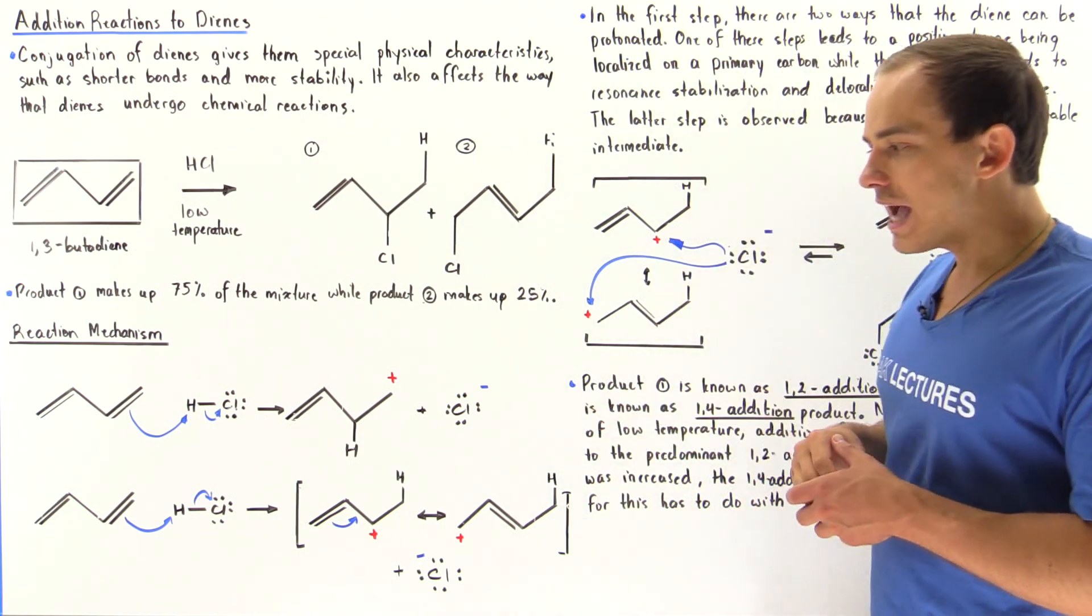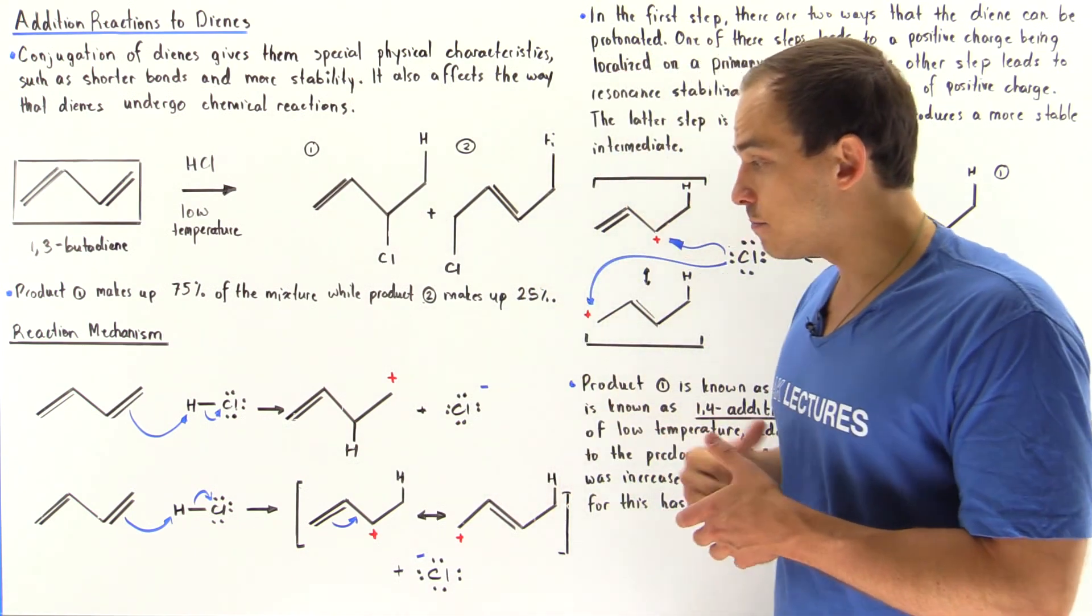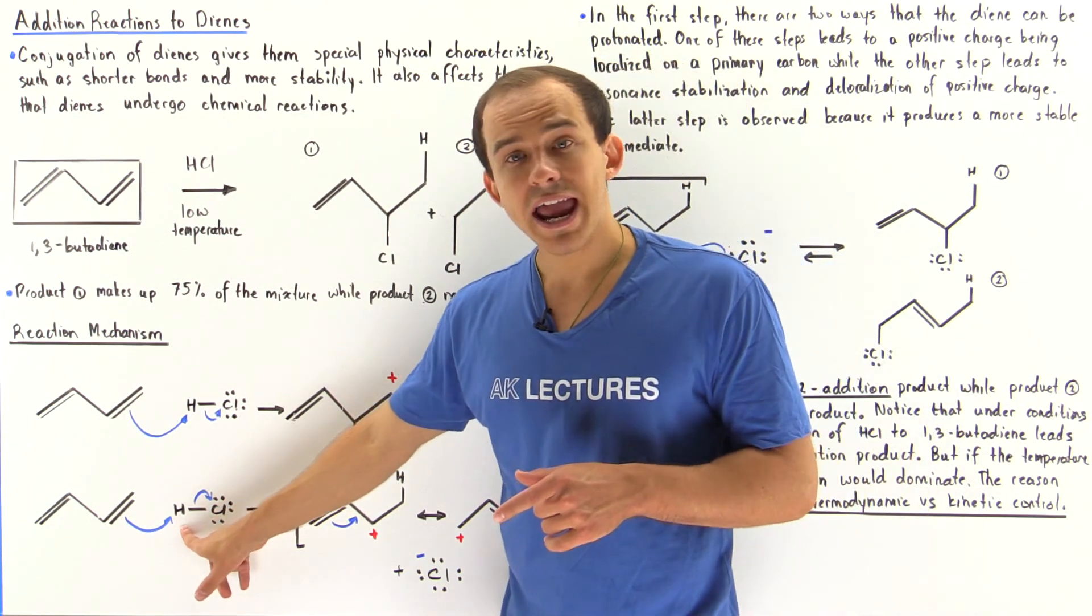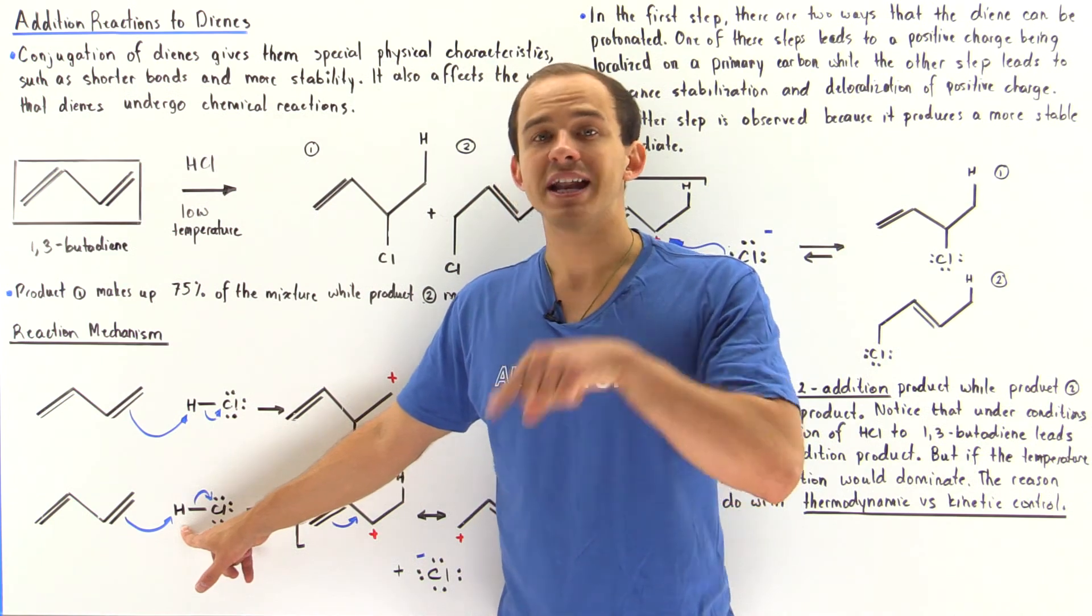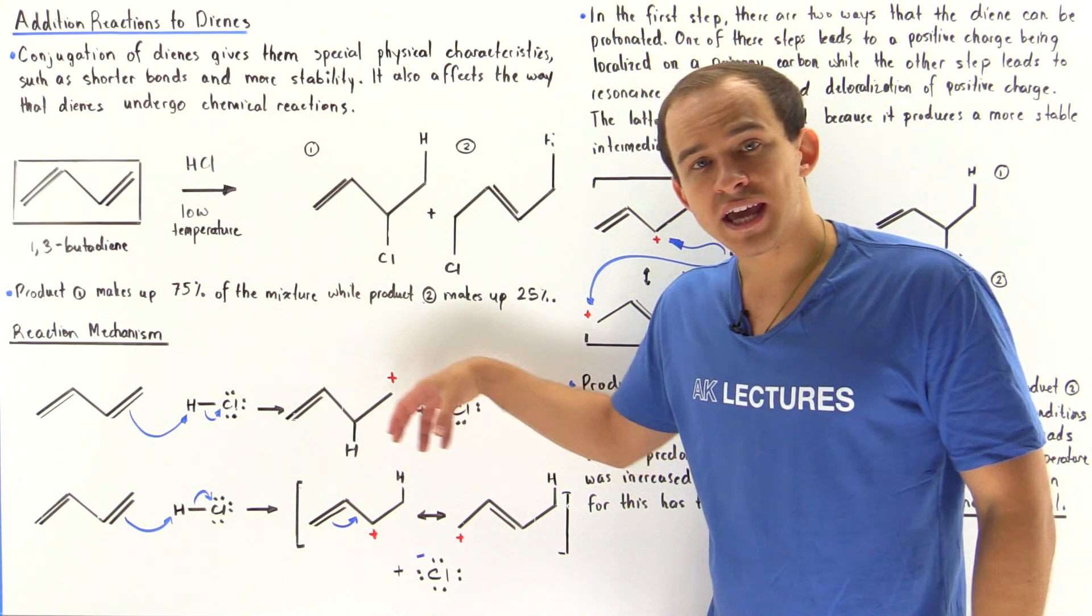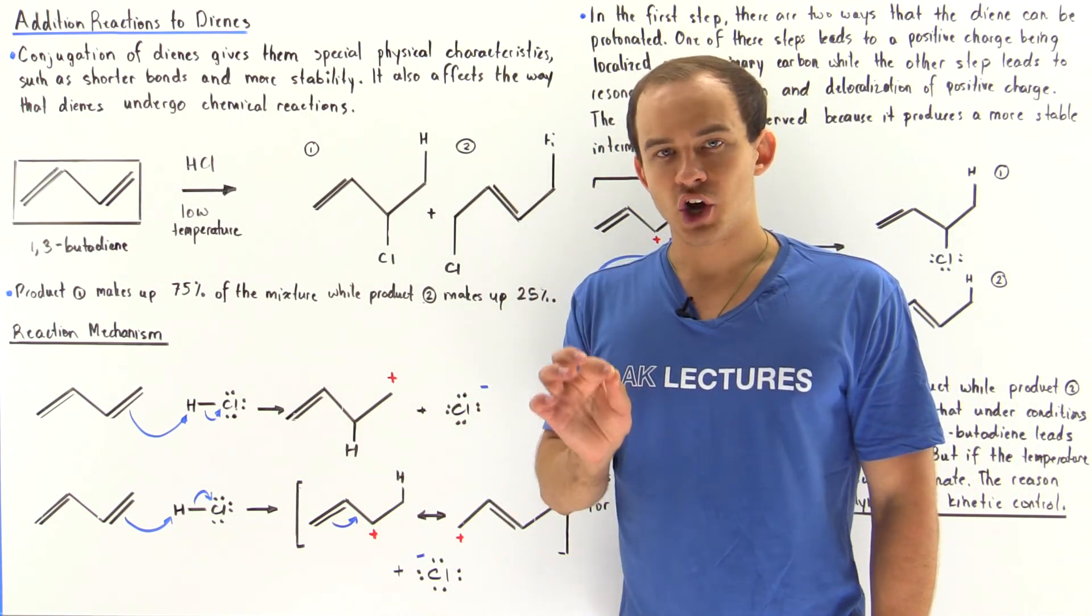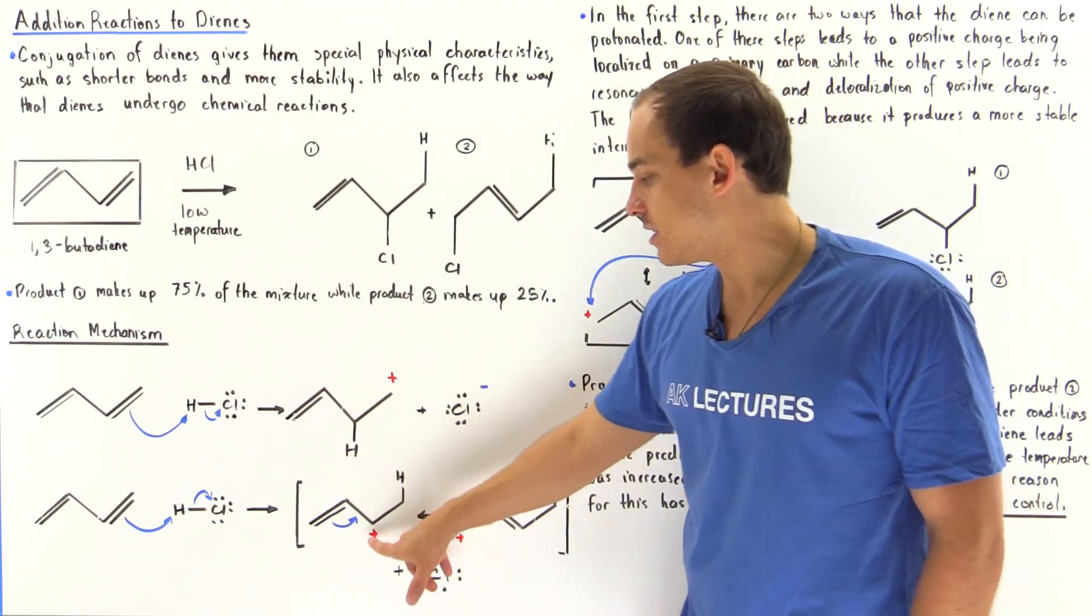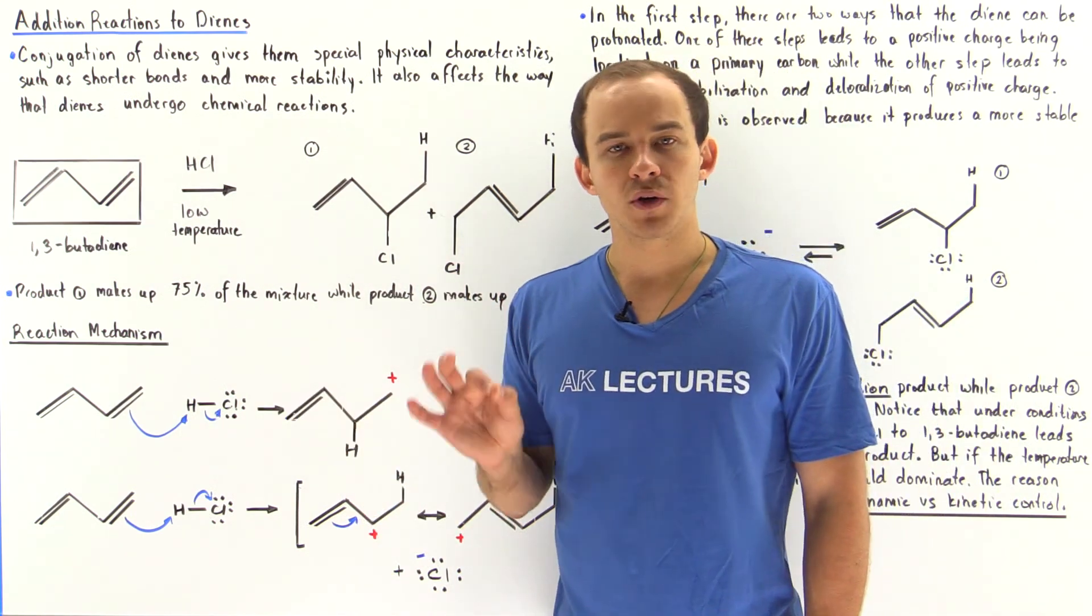Now let's look at the second possibility for our protonation step. We have this pi bond also taking our H atom, but the H atom ends up on the first carbon and not on the second carbon, forming the following carbocation that has a positive charge on the secondary carbon. We see that this is more stable than this because a secondary carbocation is more stable than a primary carbocation.